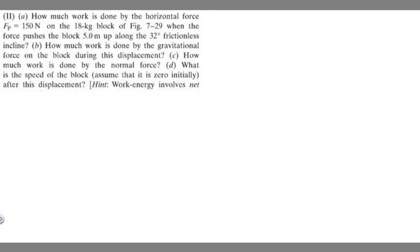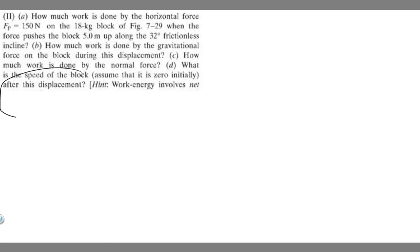In this problem, we're told to find how much work is done by the horizontal force F sub P, which equals 150 newtons, on the 18 kilogram block when the force pushes the block 5 meters up along a 32 degree frictionless incline. Part B: how much work is done by the gravitational force on the block during this displacement. Part C: how much work is done by the normal force. And D: what is the speed of the block? Assume that the initial speed is zero.